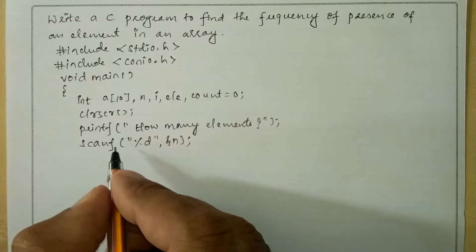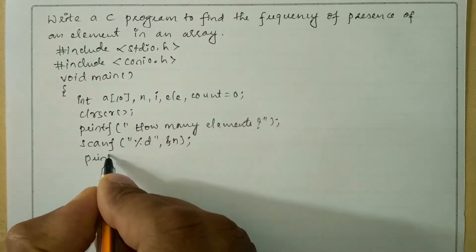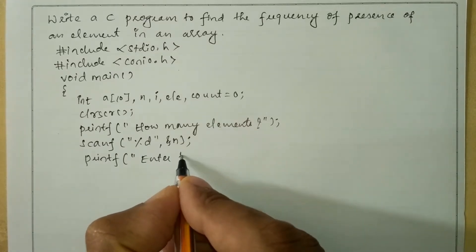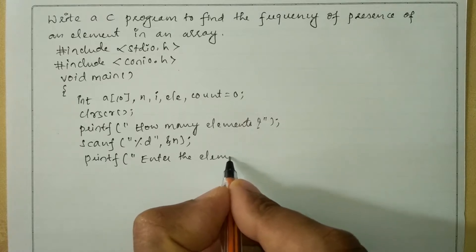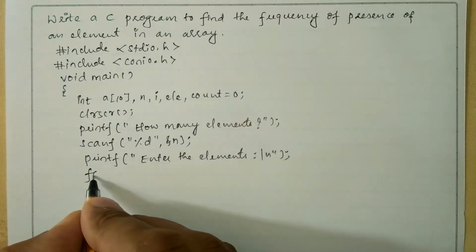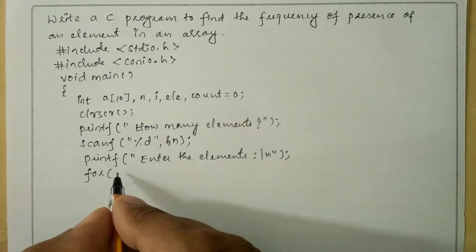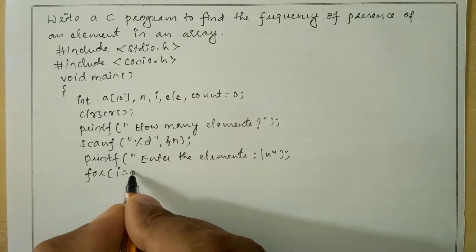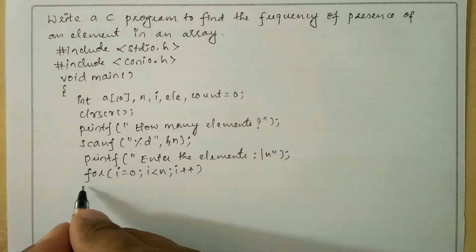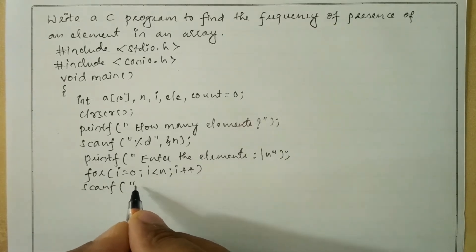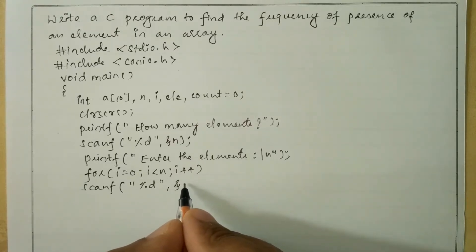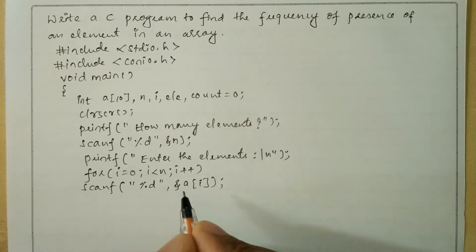Now we will ask the user to enter the elements using a printf statement: "Enter the elements" followed by a newline and semicolon. Next we will insert each element at a time using a for loop — for i=0, i less than n, i++. Inside the loop we write a scanf statement with %d format specifier and &a[i].